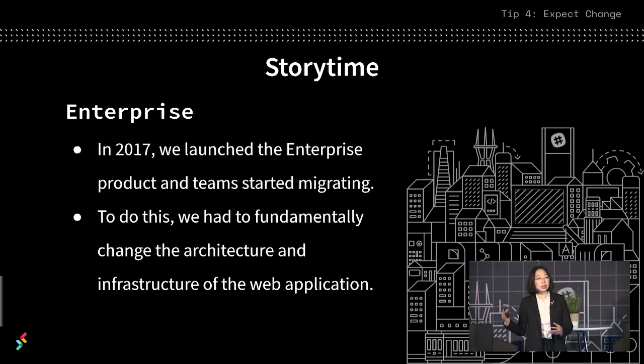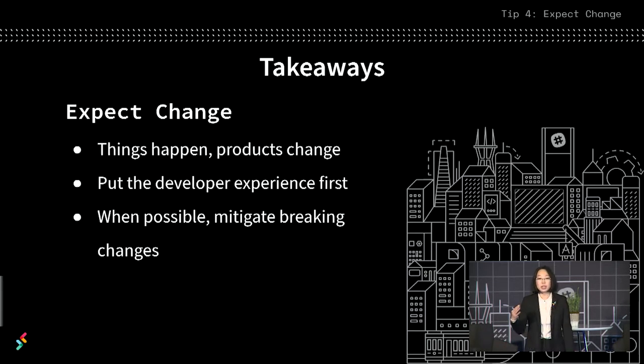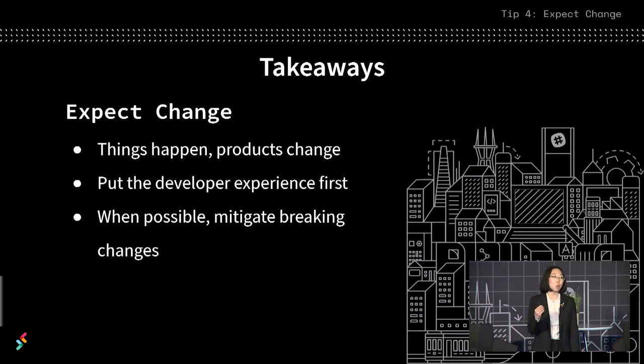Now, if we had just let this change go through the API, there would definitely have been applications that got confused about why one user that they'd stored state with all of a sudden had a different ID or appeared to be a new user. So when things do happen and products do change, it's really important to put the developer experience first. When possible — and it's not always possible — it's worthwhile to mitigate these breaking changes. What we did at Slack was we built an entirely new piece of infrastructure that would translate these IDs back and forth, so that app developers could continue to receive a consistent ID for the users that they were interacting with.